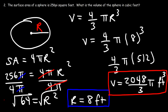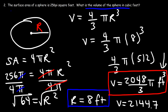To get the decimal value, multiply pi (3.14159) by 2048 divided by 3, and you get approximately 2144.7 cubic feet. That's the volume of this sphere when given its surface area.